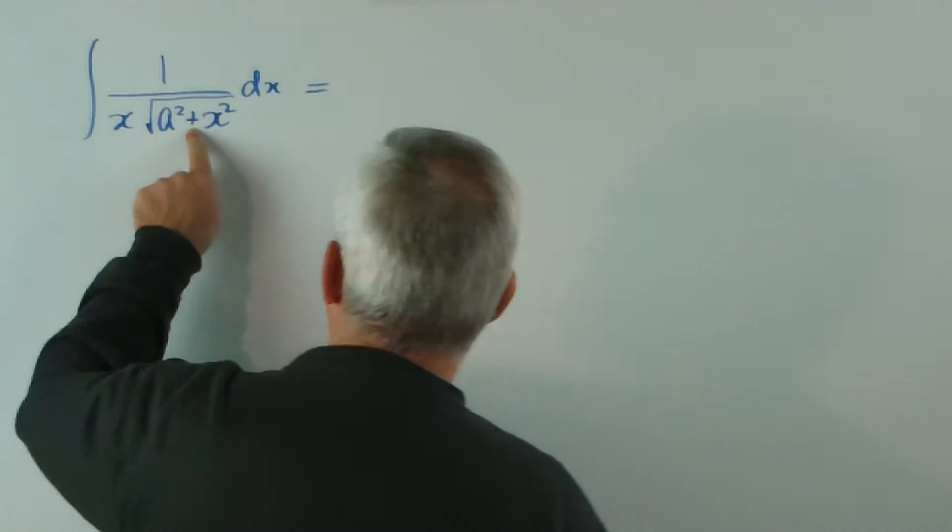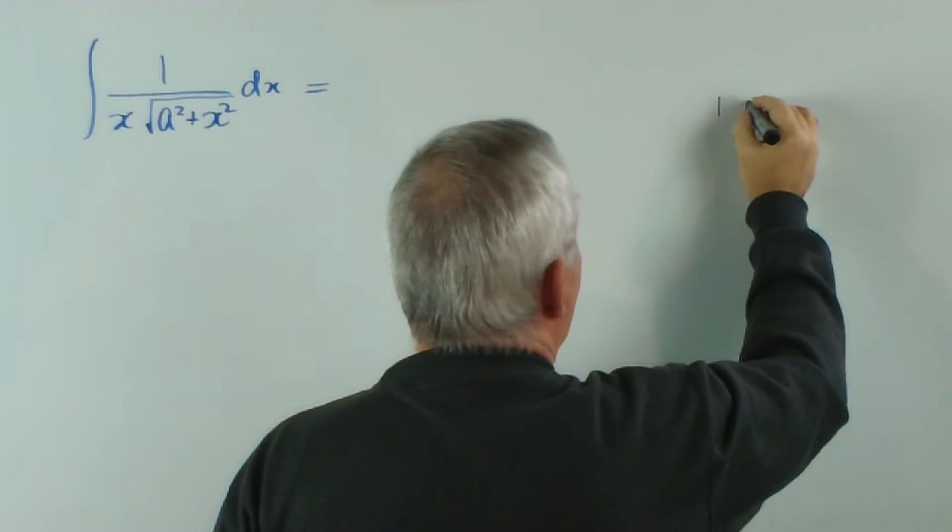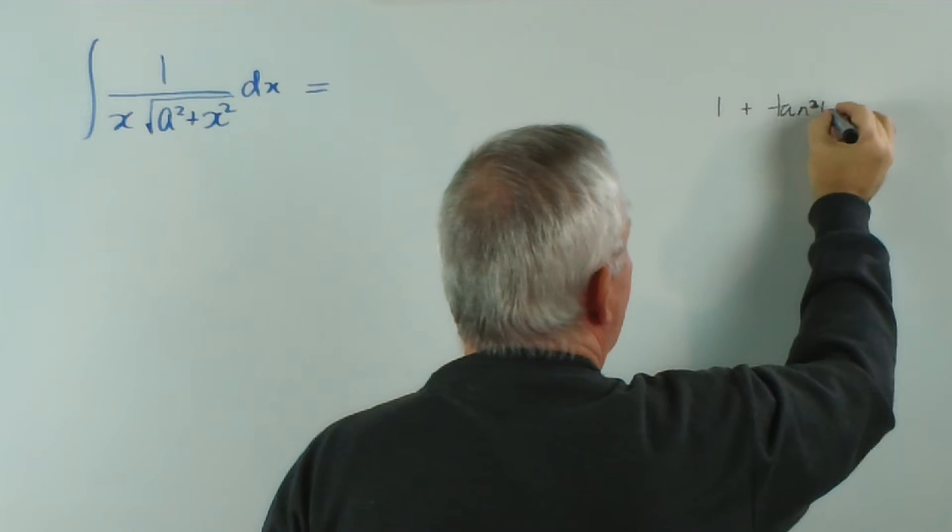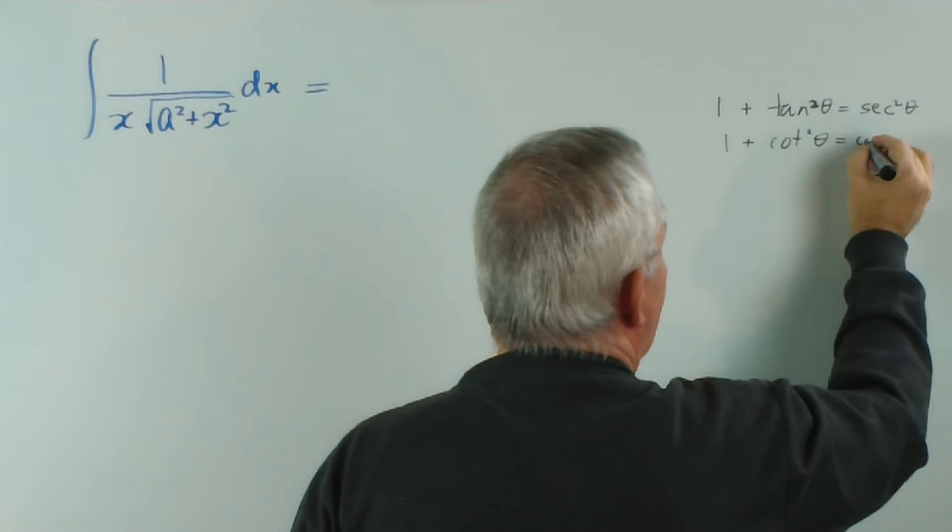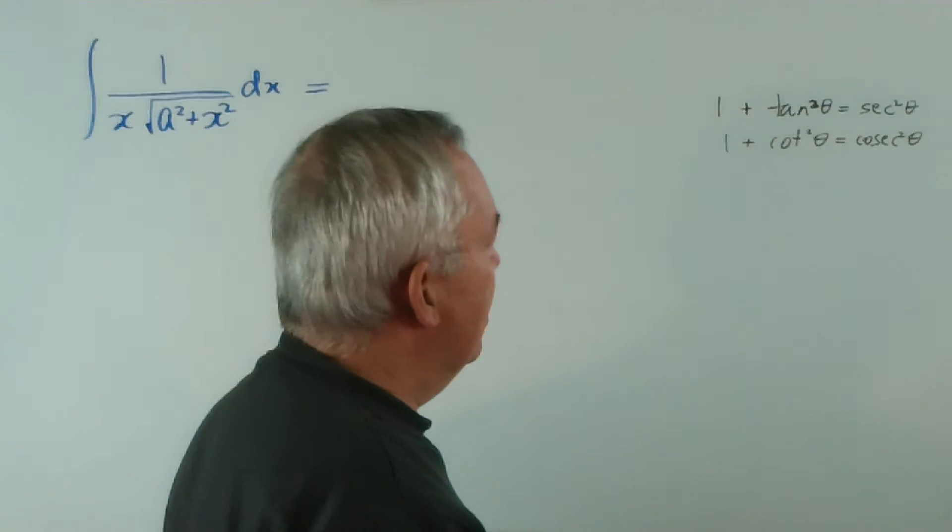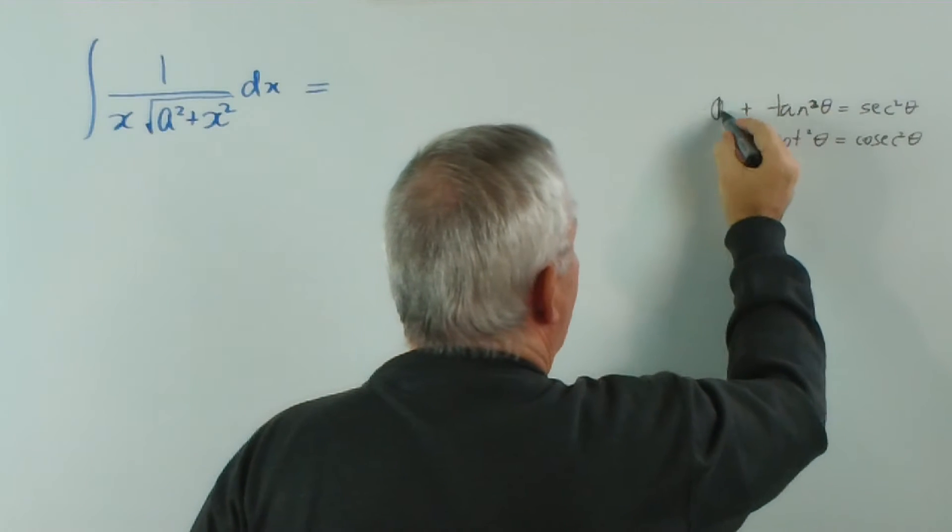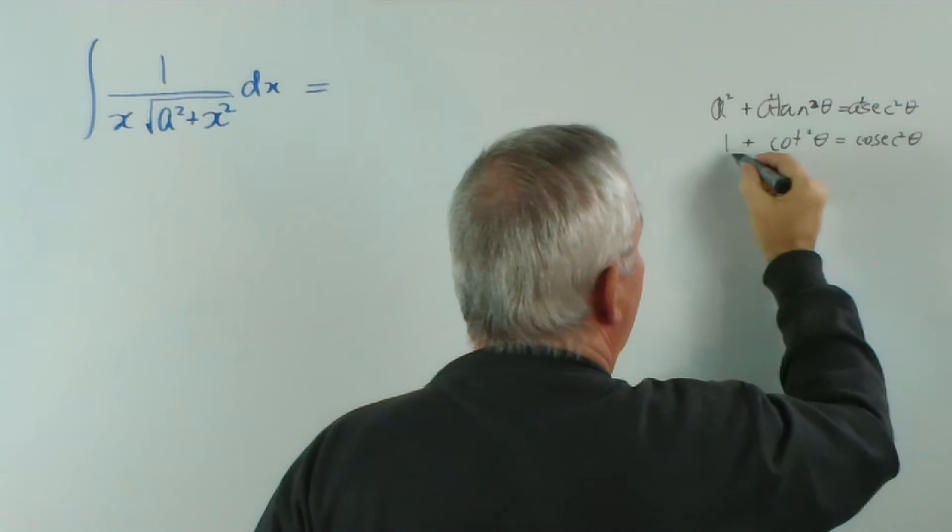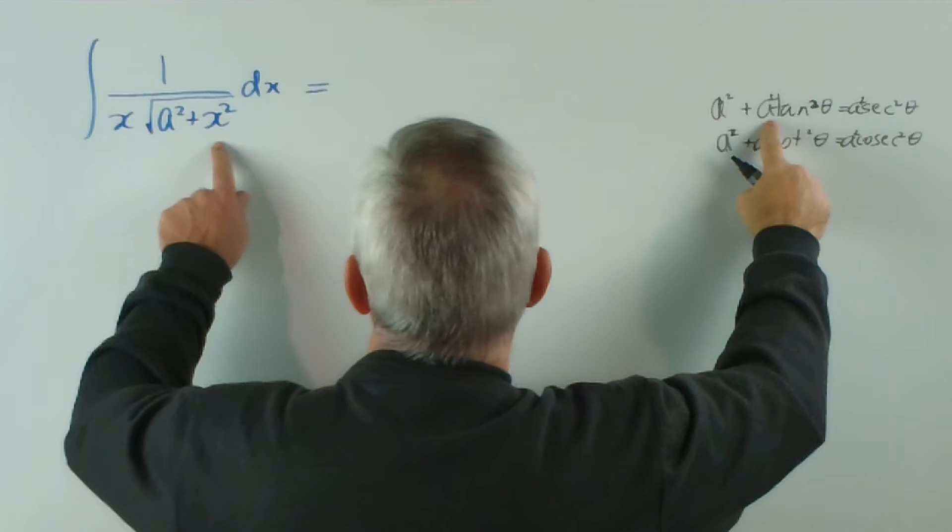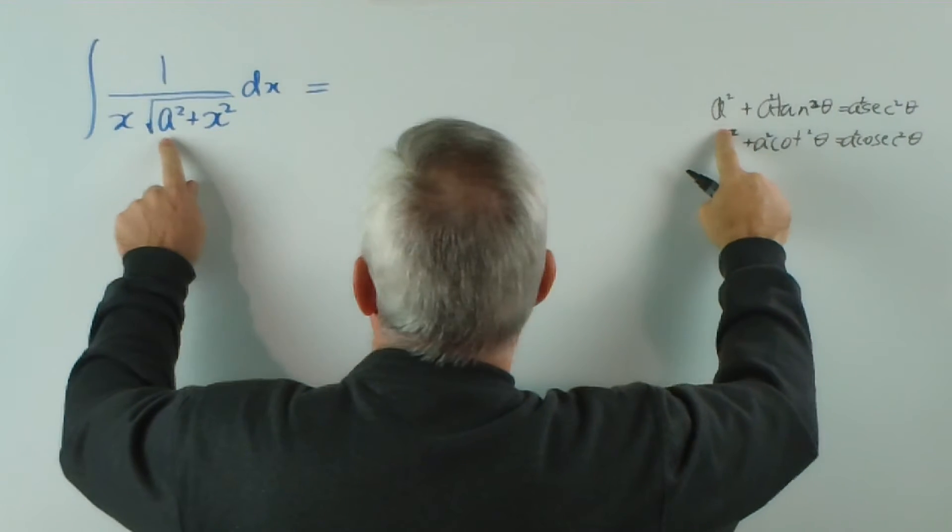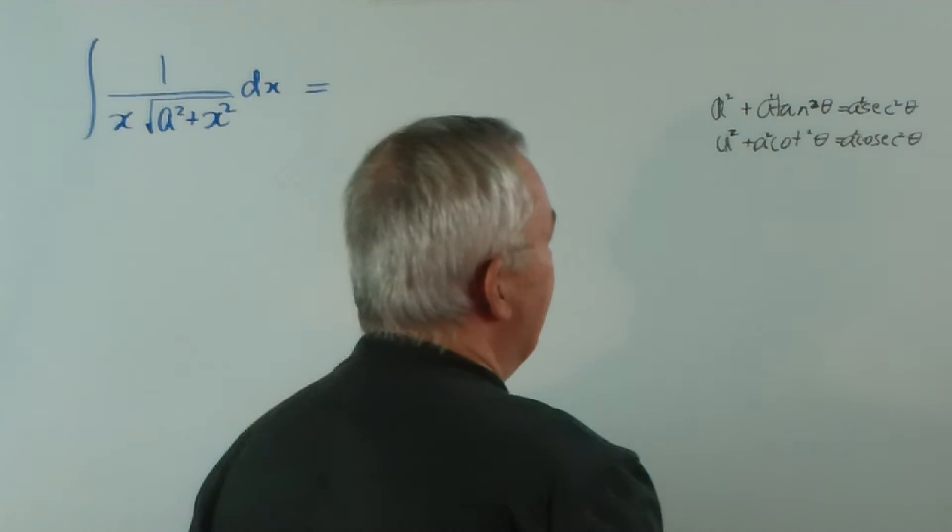Now, which substitution? Notice we have a plus here, so I'm looking for a trigonometric identity which would be something like 1 plus tan squared theta is sec squared theta and 1 plus cot squared theta is cosec squared theta or CSC if you're in the States. Either of these would be satisfactory given that if I multiply everything by a squared, if I substituted X for a tan theta or a cot theta, this expression would become a squared plus this, and I can actually take the square root of these, so these would be satisfactory substitutions.